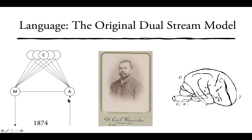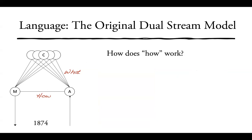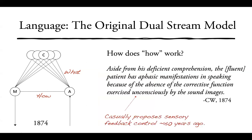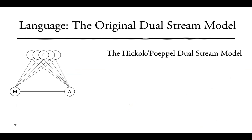In Wernicke's model, comprehension involves one pathway, production involves all the pathways, and repetition involves another pathway. This is basically a 'what' pathway — understanding what is being heard — and a 'how' pathway — how to reproduce the sounds with the vocal tract. Regarding how the how stream works, Wernicke writes that in fluent aphasics, 'the patient has aphasic manifestations in speaking because of the absence of the corrective function exercised unconsciously by the sound image' — basically a precursor to sensory feedback control models, 150 years ago.